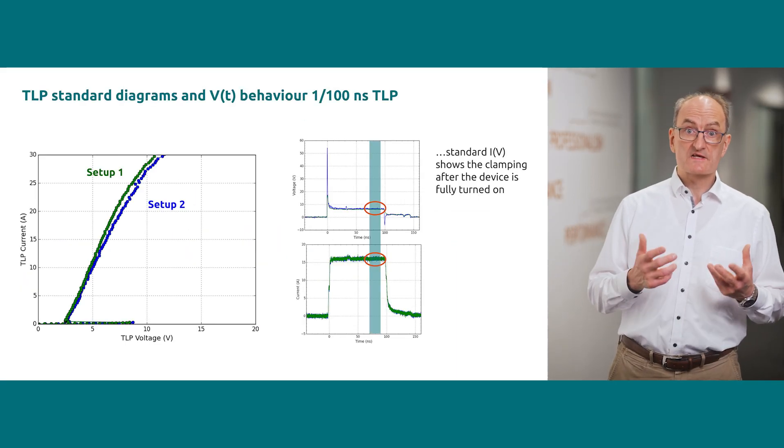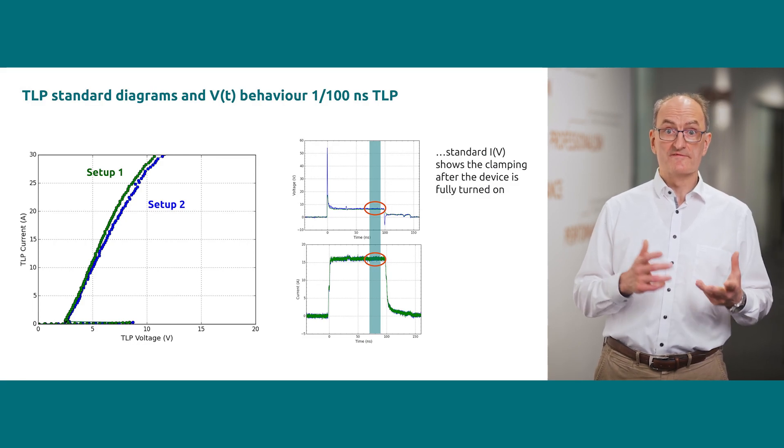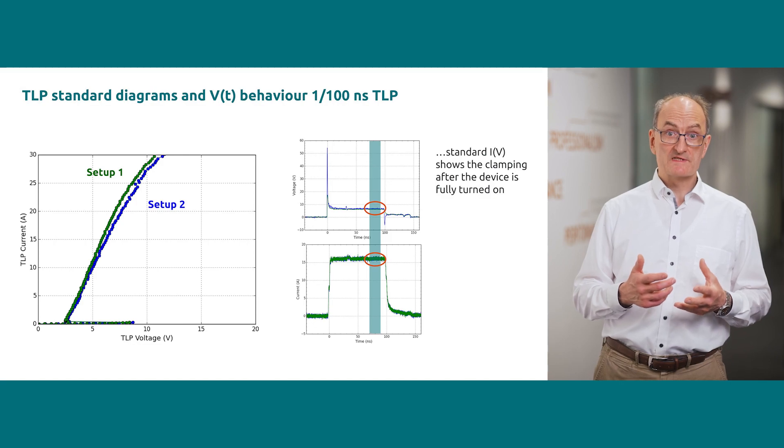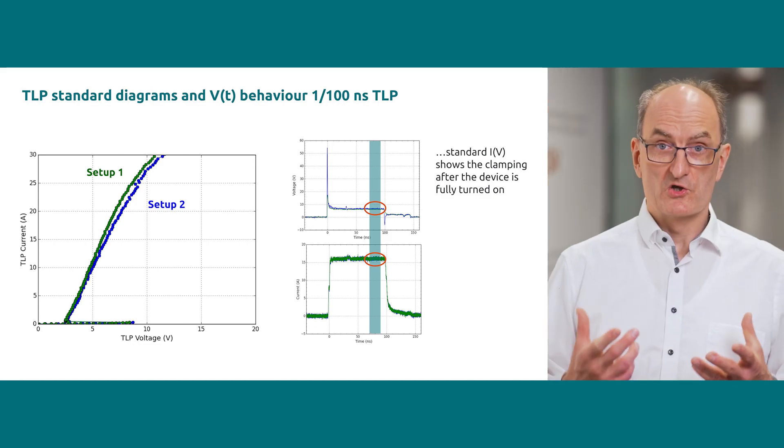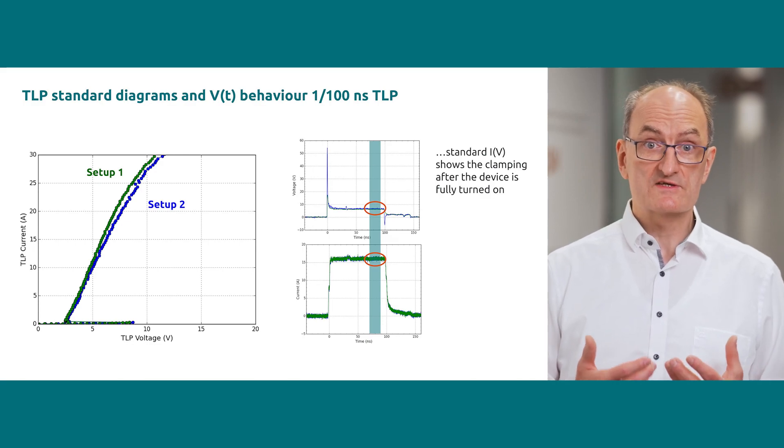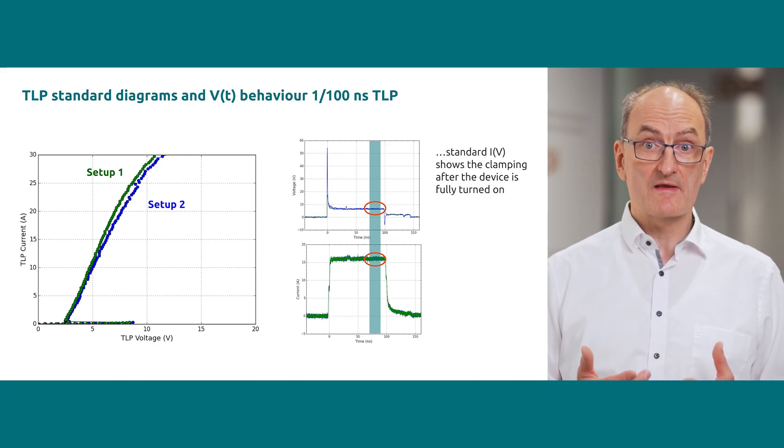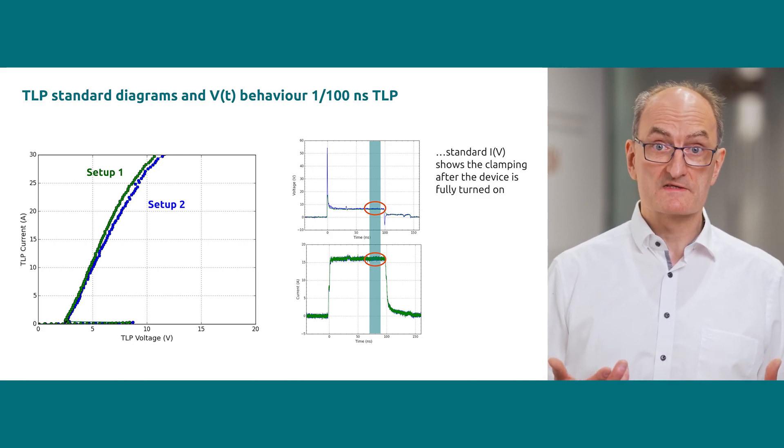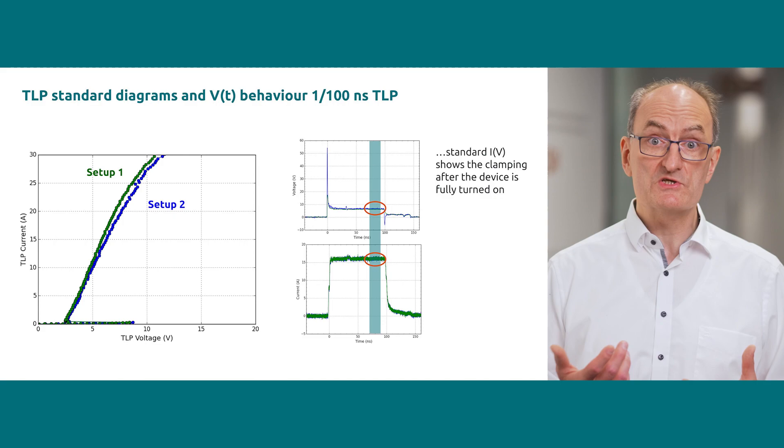In the standard quasi-static current over voltage TLP diagram, the difference between both measurements appears to be small. Looking at the behavior of voltage over time, the limitations of such quasi-static TLP diagrams become obvious when the fully dynamic behavior is in focus, since the peak clamping voltage will not be shown.